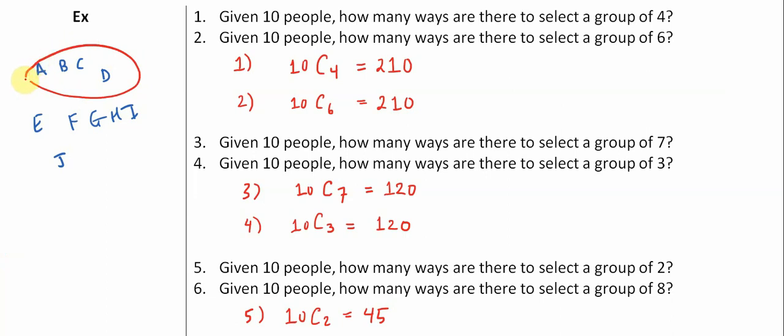Let's say we pick these four. Okay, that's the same thing as not picking these six people, right? So you can look at combinations as really a way of separating. When I say I'm picking a group of four...